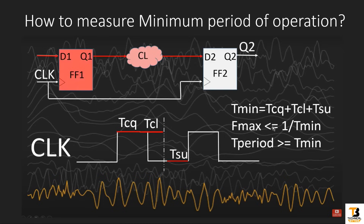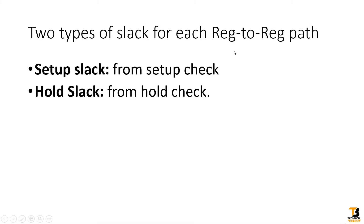But now the question arises: how will the timing analyzer tool report the analysis? Will it report T-minimum? The answer is no. For each register-to-register path, the timing analyzer tool does two types of checks. One is called setup check, from which it calculates the setup slack. The other type is hold check on the same register-to-register path, from which it calculates the hold slack. So there are two types of slack for the same register-to-register path reported by the timing analyzer tool.